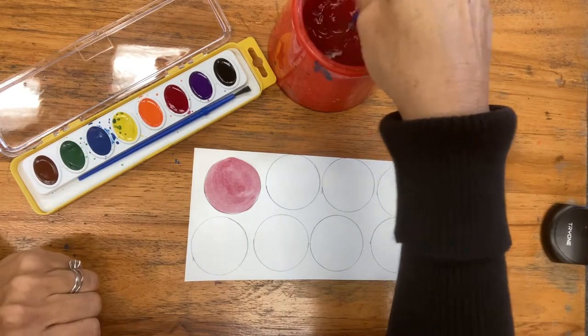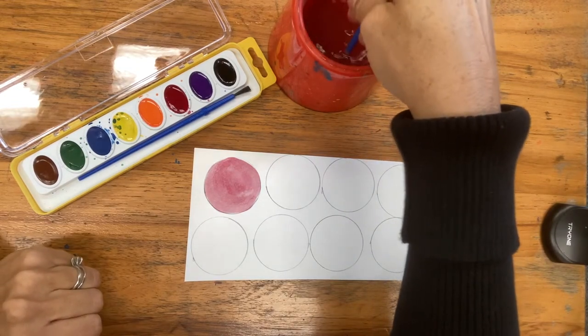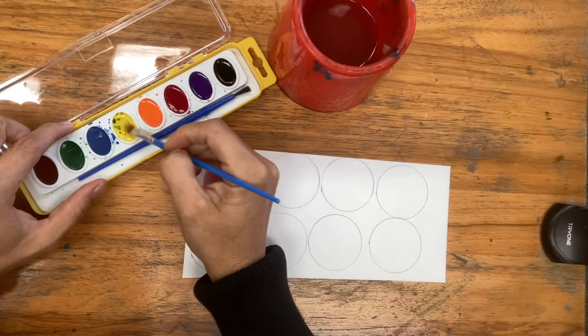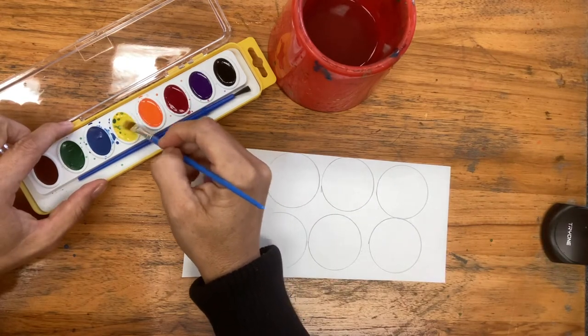I'll rinse my brush and I'll move on to another primary color. I'll do my yellow which has a little blue in it but I'll try not to make have it change color just yet.